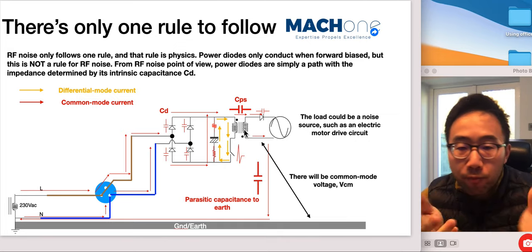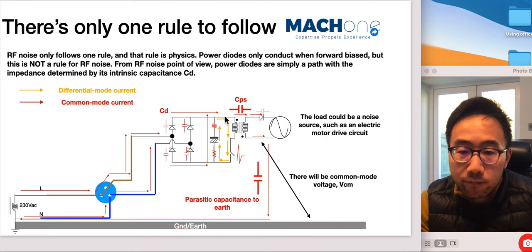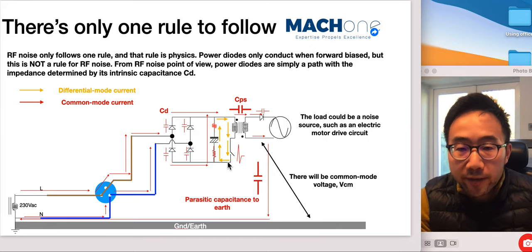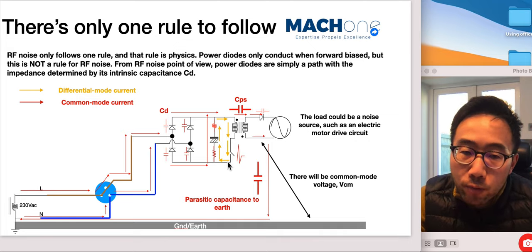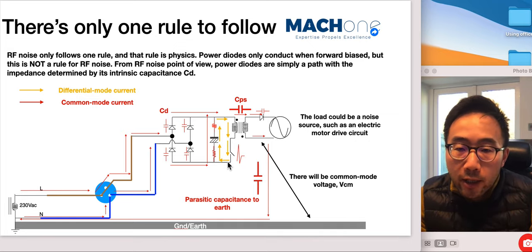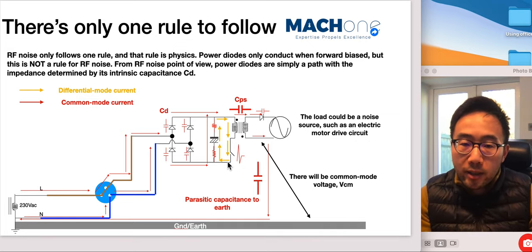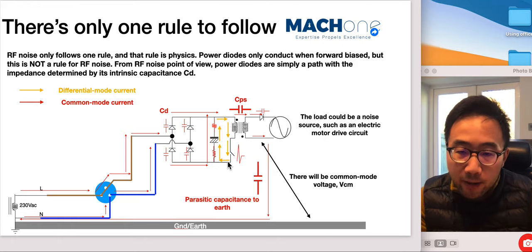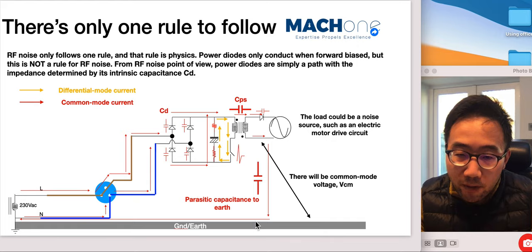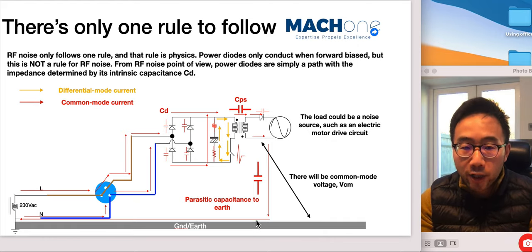if you measure between the VDC plus and VDC minus, we're measuring differential mode noise, right? But in fact, in the world of physics, this point to this earth point also has a potential change, isn't it?